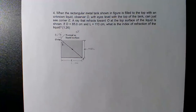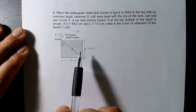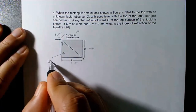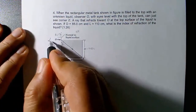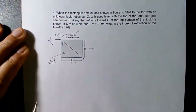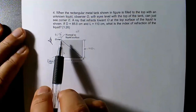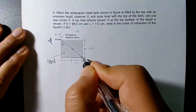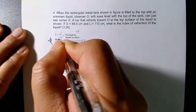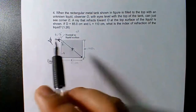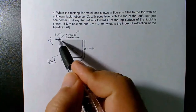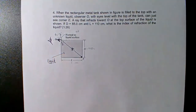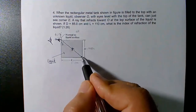The next problem says: a rectangular metal tank is filled to the top with an unknown liquid whose index of refraction we don't know. An observer with eyes level with the top of the tank can just see corner E. The light from this corner goes to the surface and bends, making a 90-degree angle at the interface — that's why the observer can just barely see the corner because of the bending of light.